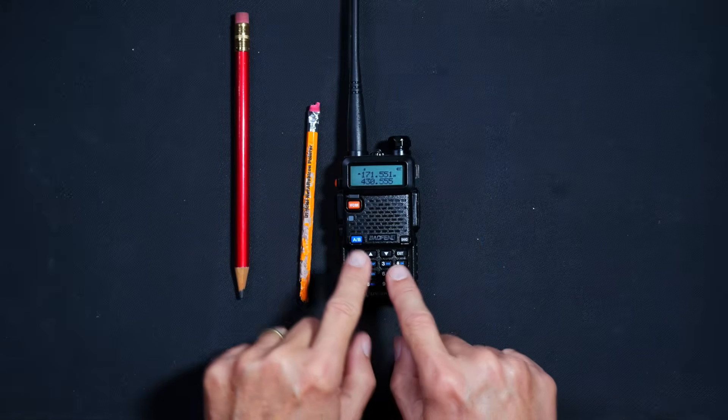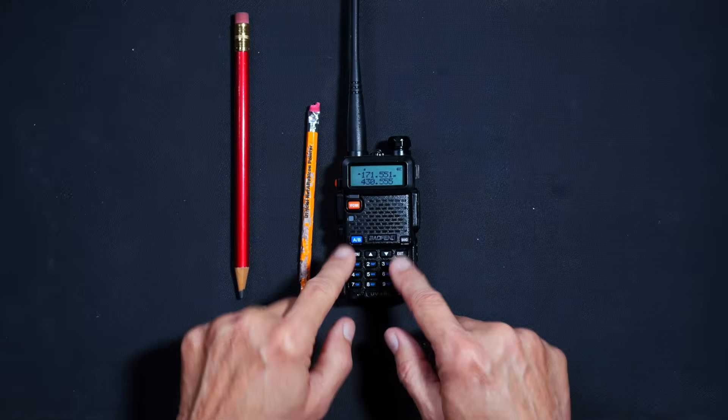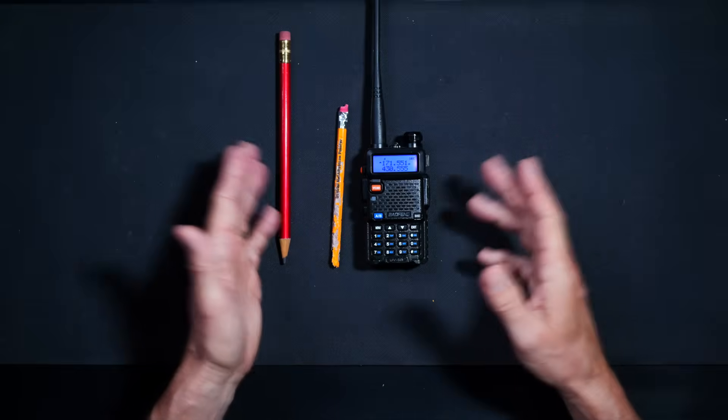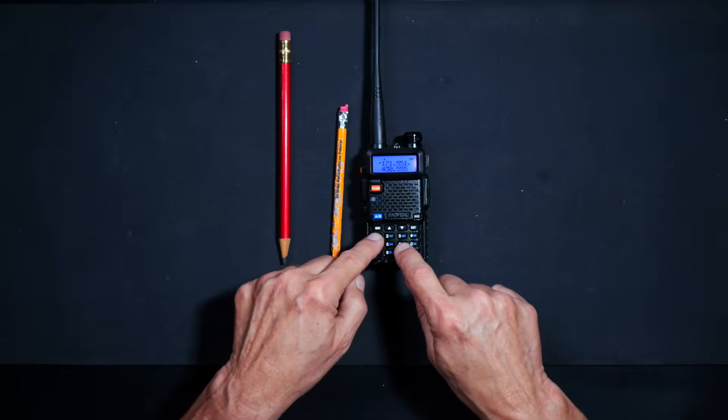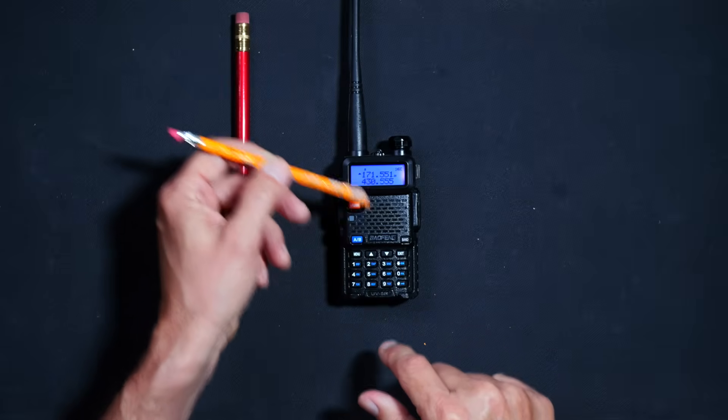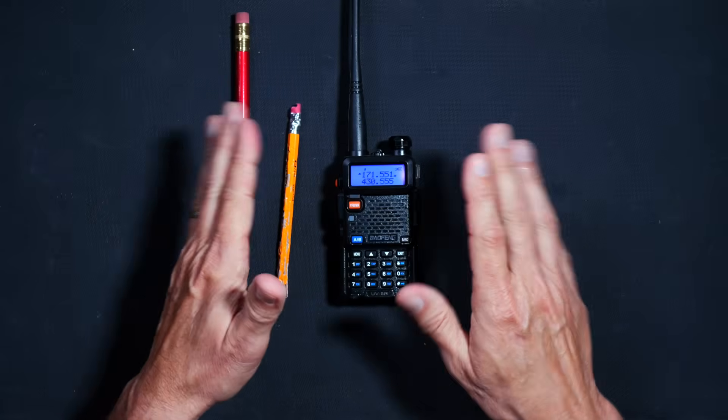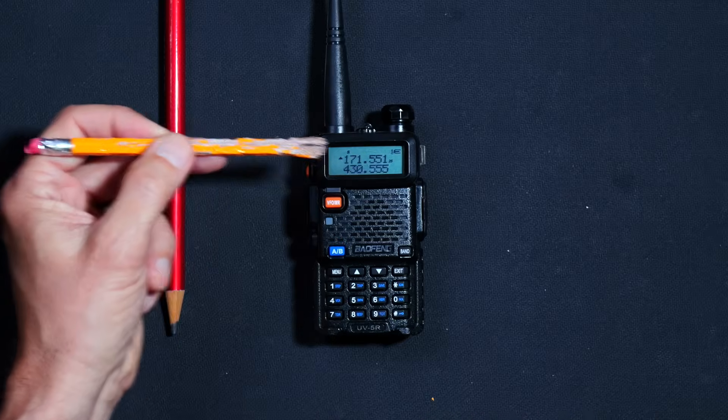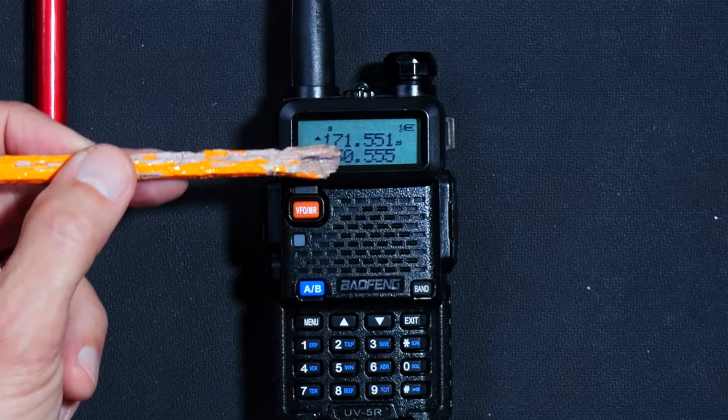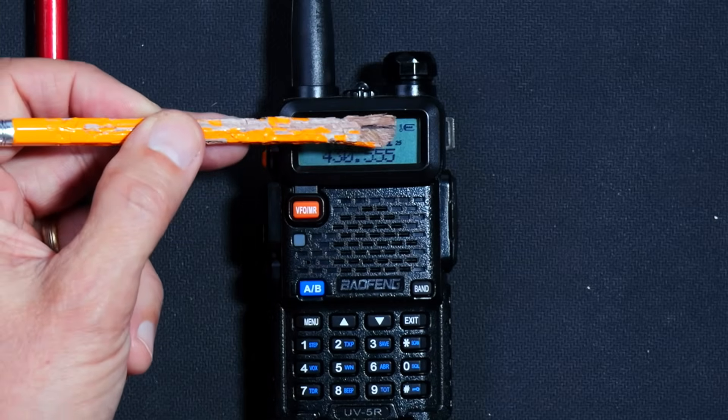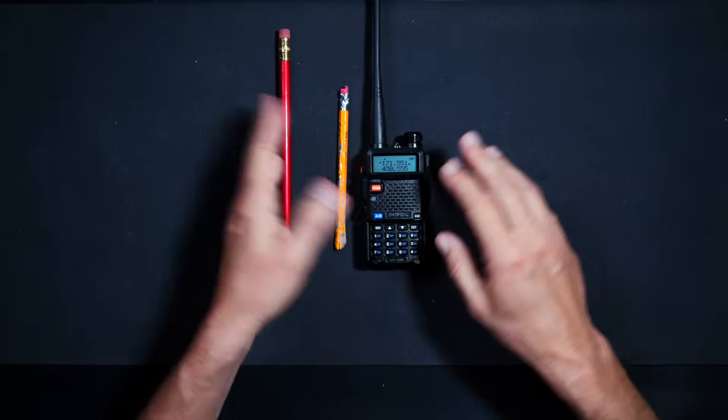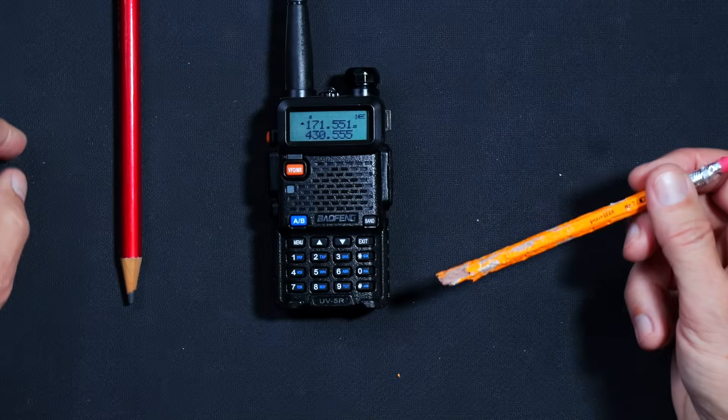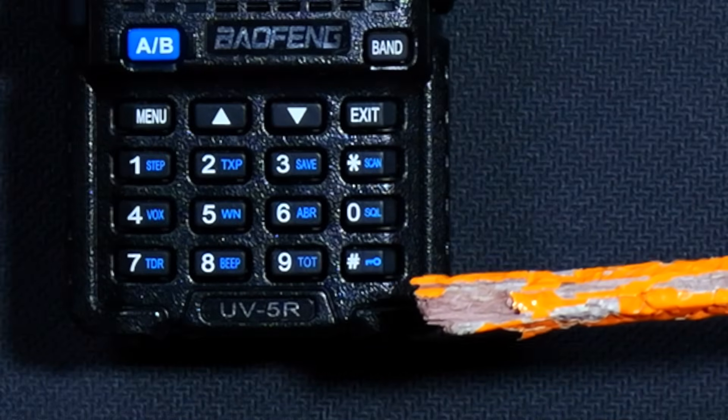The next step is to type in the frequency that you wrote down earlier. In my case, 162.450 megahertz. If when you try to type in the frequency, the radio just beeps at you and nothing on the screen changes, this means that either you are doing it wrong or the keypad is locked. If the keypad is locked, you will see a tiny locked icon in the upper right of the screen, right next to the battery icon.